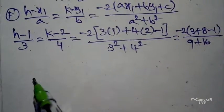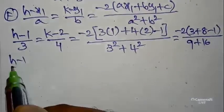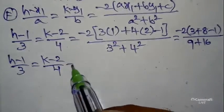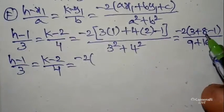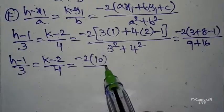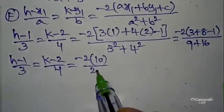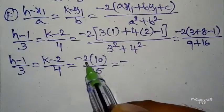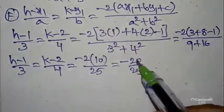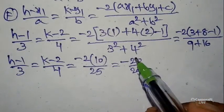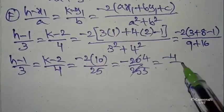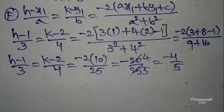So (h - 1)/3 = (k - 2)/4 = -2(11 - 1)/25 = -2(10)/25. We can cancel: 5 goes into 20 four times and 5 goes into 25 five times, so this equals -4/5.